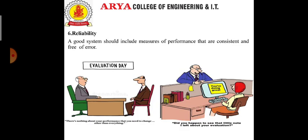The next is reliability. A good system should include measures of performance that are consistent and free of errors. For example, if two supervisors provide ratings of the same employee using the same performance dimensions, the ratings should be similar between both managers or supervisors.